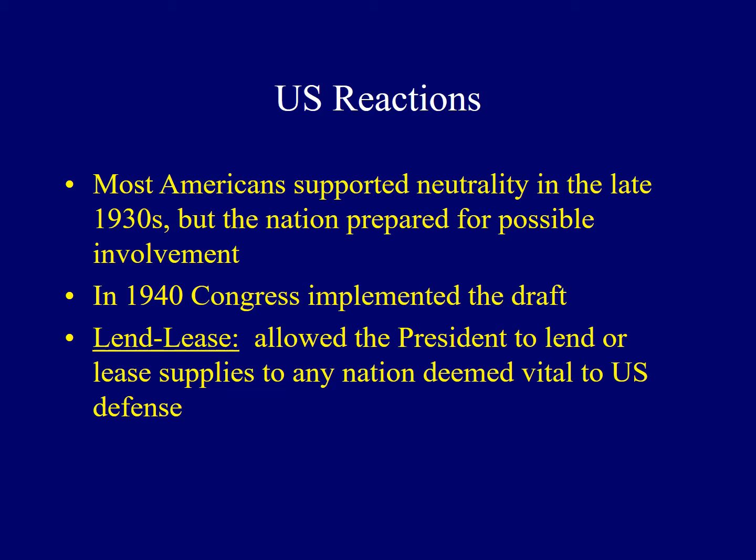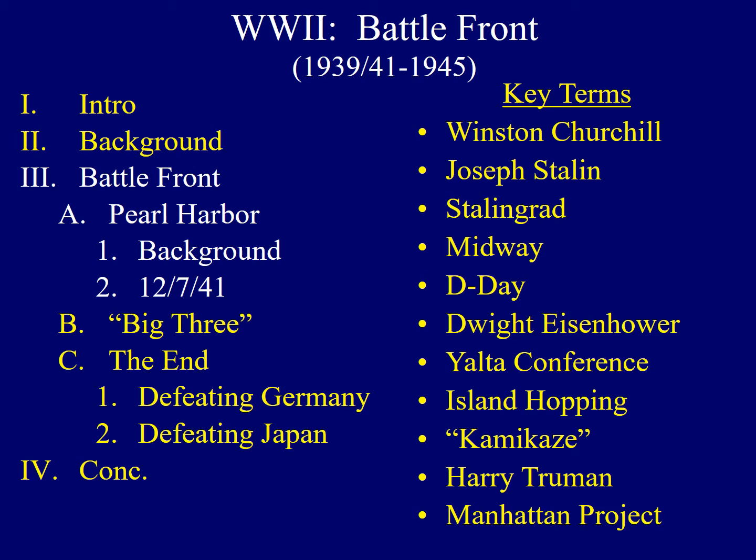President Franklin Roosevelt declared American neutrality as the fighting began in 1939, and most Americans supported this stance. However, people became shocked as the fighting continued in the months thereafter. The United States then began to prepare for its possible involvement, best seen in 1940 when Congress implemented the first-ever peacetime draft in U.S. history. By March of 1941, Congress had given the President the so-called Lend-Lease Authority — to lend or lease supplies to any nation he felt was vital to American defense. Germany was seen as a major threat. However, it was American relations with Japan which brought the United States into an active role in World War II.